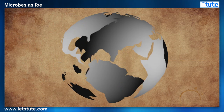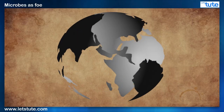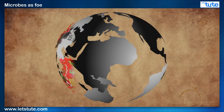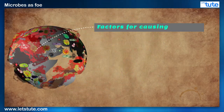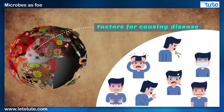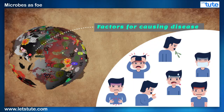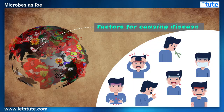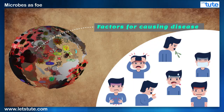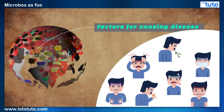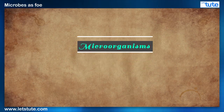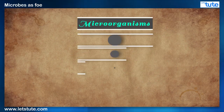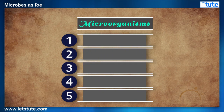We concluded our earlier session with a discussion on how these microorganisms are present everywhere and how they are among the biggest factors for causing disease. So in this session, let's understand the broad categories of these microbes and also see how they act against us. Microbes are classified into five major groups.